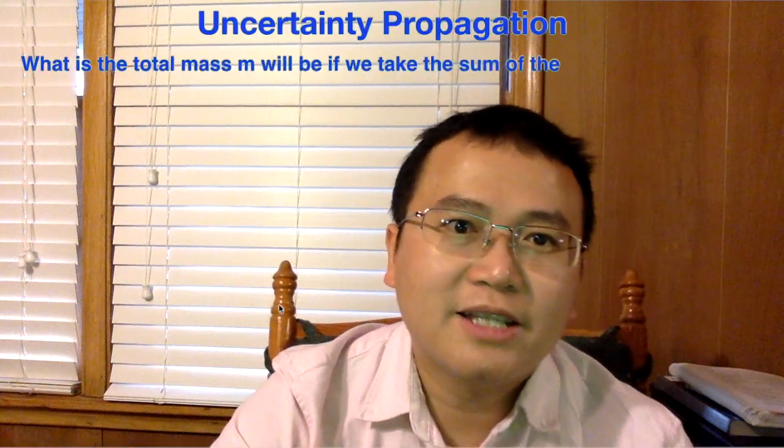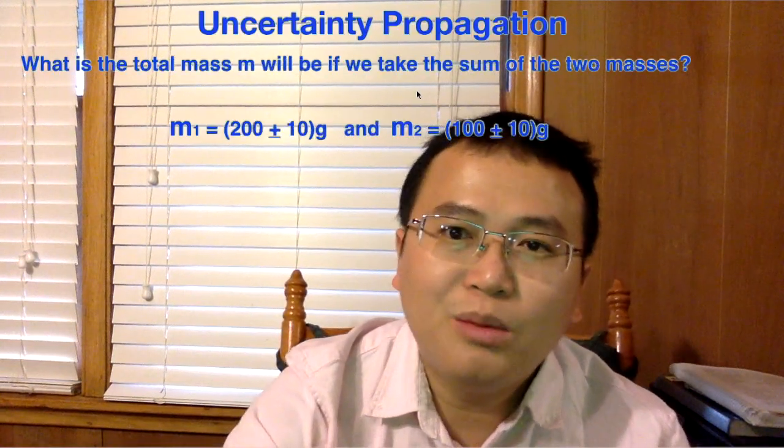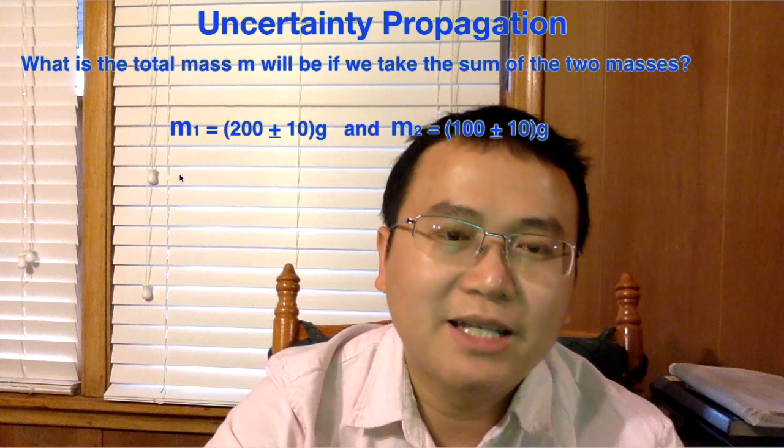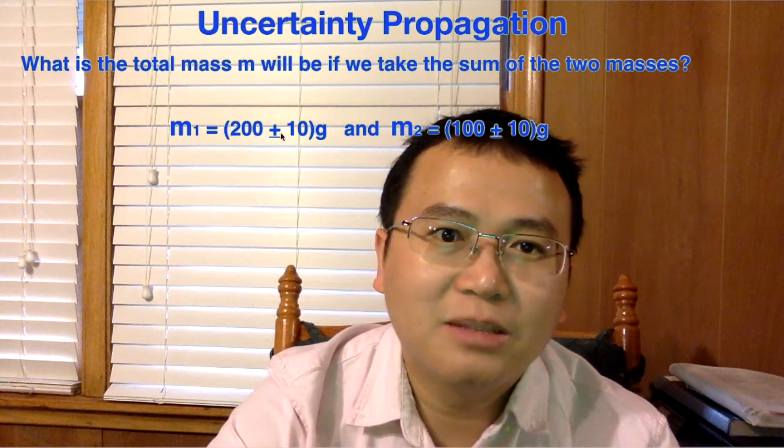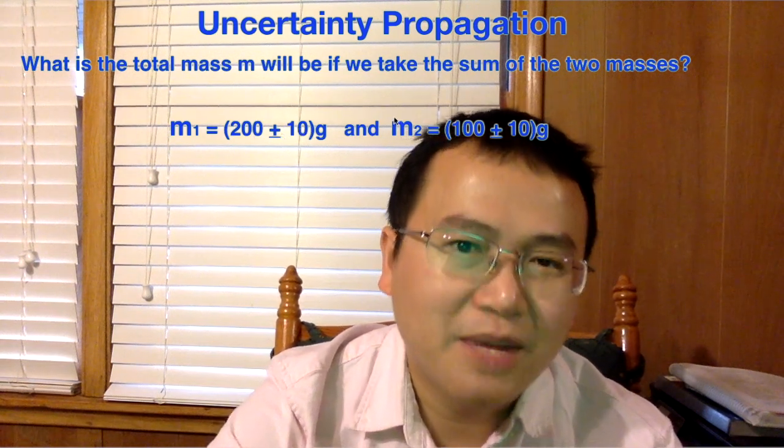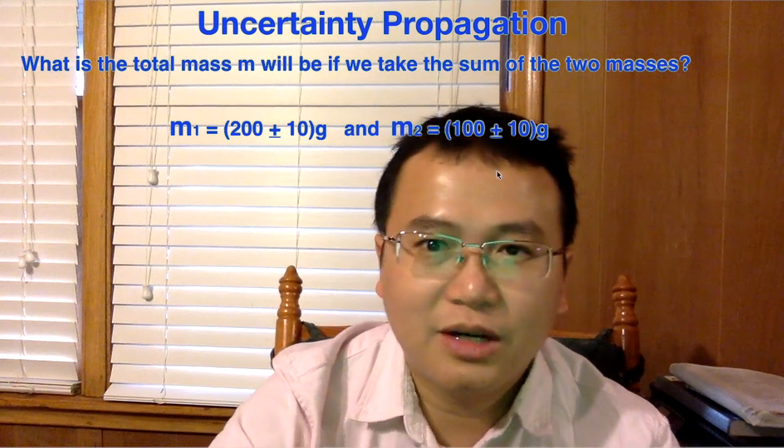What is the total mass M will be if we take the sum of the two masses? Mass M1 is 200 plus or minus 10 grams. Mass M2 is 100 plus or minus 10 grams.